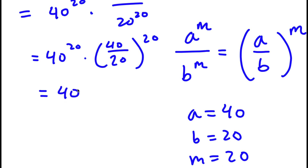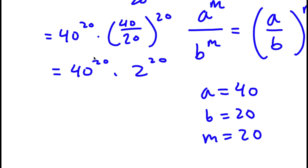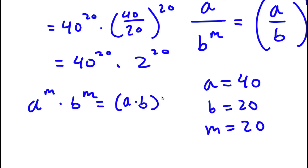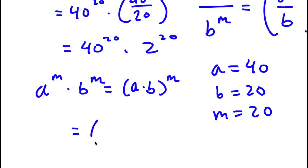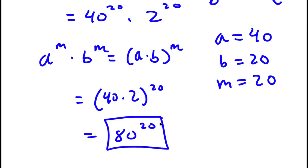So now I have 40 to the power of 20 times 2 to the power of 20. Since A to the power of M times B to the power of M equals A times B to the power of M, that's going to equal 40 times 2 to the power of 20. 40 times 2 is 80, so this gives 80 to the power of 20. And this is my answer.